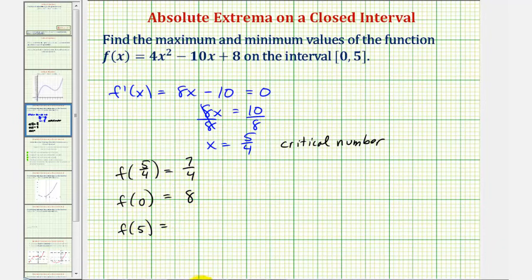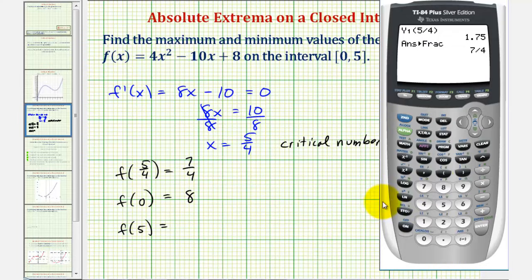And then for f of five, again we'll press vars, right arrow, enter, enter, and then parentheses five. Of course we could also evaluate these by hand if we wanted to. So f of five is equal to fifty-eight.